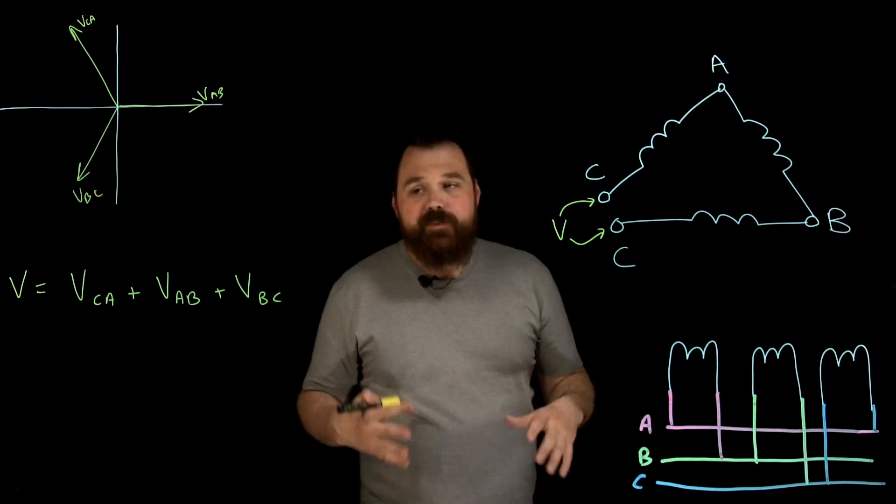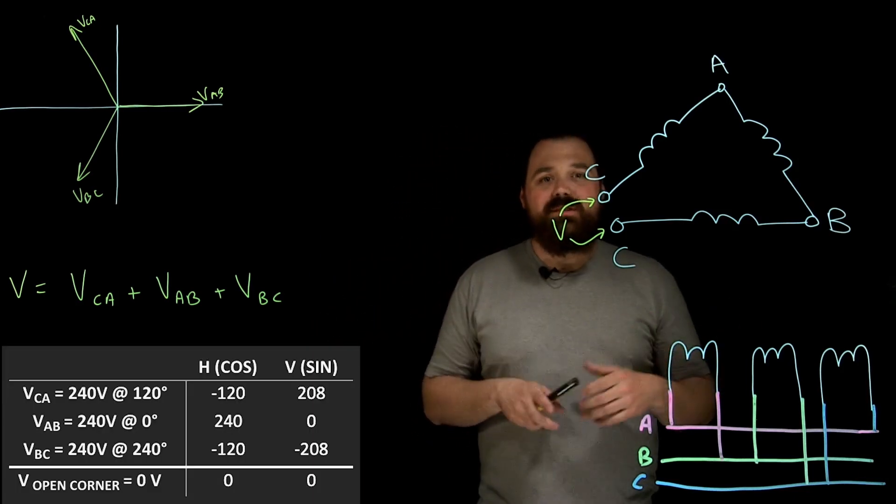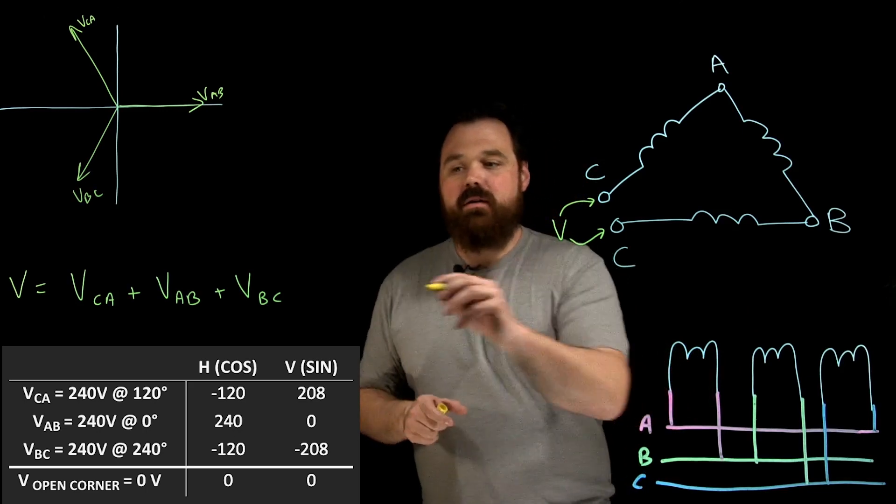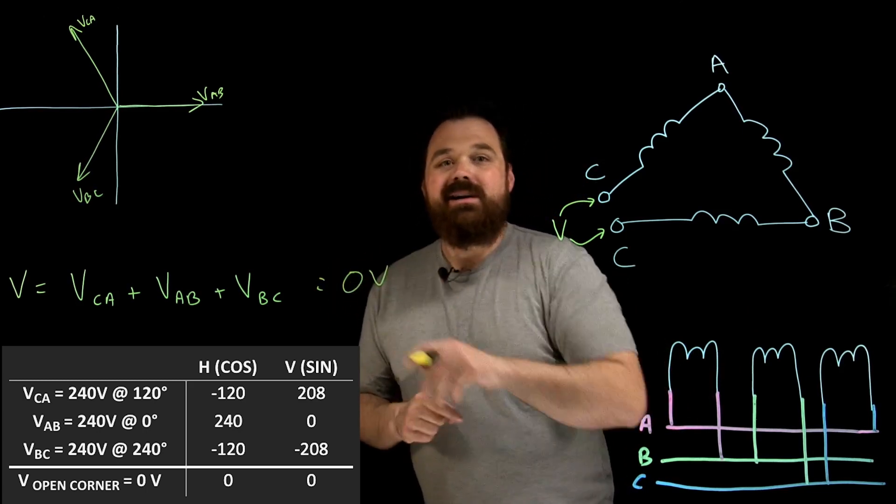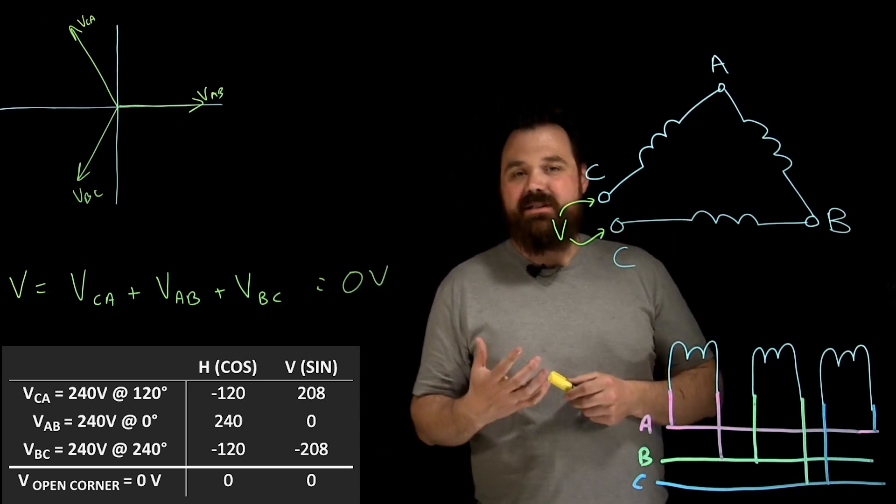When I add all that up, I get an HV chart. It would look something like this. And what we notice is that we get 0 volts. So we would say 0 volts is a proper connection. That's a good connection. That's what we want to see.